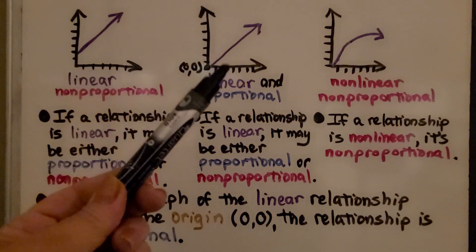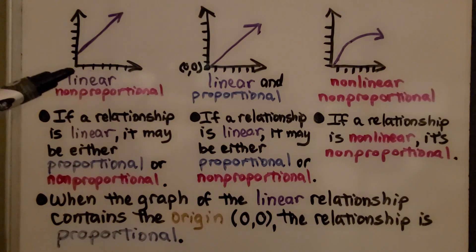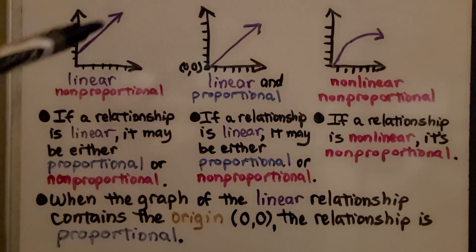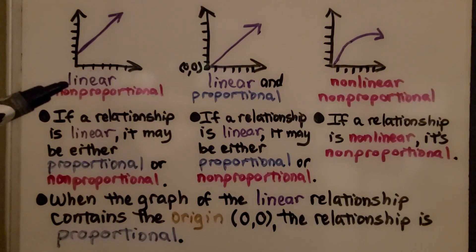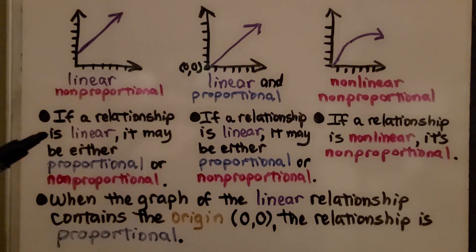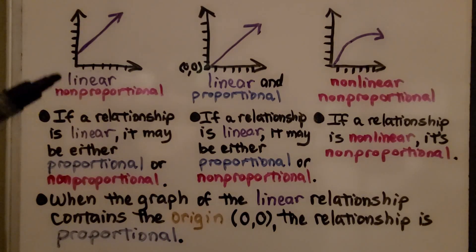Now look at these three graphs. We have this one — it's not going through the origin. It is a straight line, so it is linear, but because it's not going through the origin, it's non-proportional. If a relationship is linear, it may be either proportional or non-proportional, and in this case it's non-proportional because it's not going through the origin.